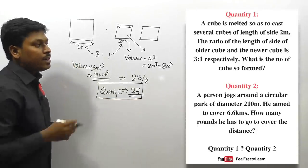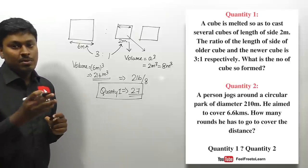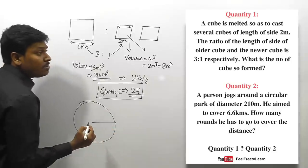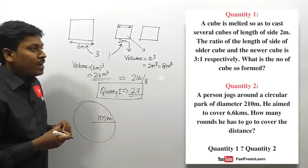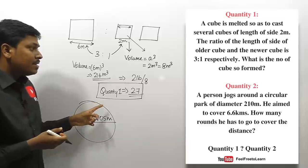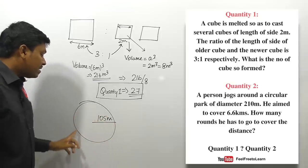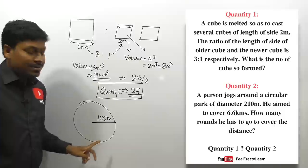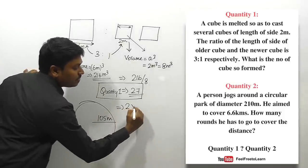Quantity two: a person jogs around a circular park of diameter 210 meters. The radius is 105 meters. He aims to cover 6.6 kilometers. First, find the circumference using 2πr = 2 × (22/7) × 105.